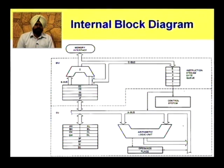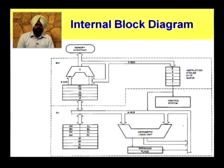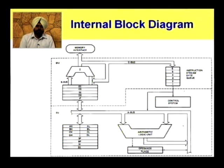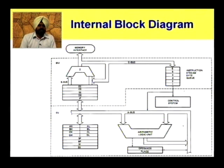We have 4 segment registers: ES, CS, DS, and SS. ES is the Extra Segment register, CS is the Code Segment register, DS is the Data Segment register, and SS is the Stack Segment register. Along with these segment registers, we have the Instruction Pointer, a pointer register. The use of these registers will be discussed in another lecture.